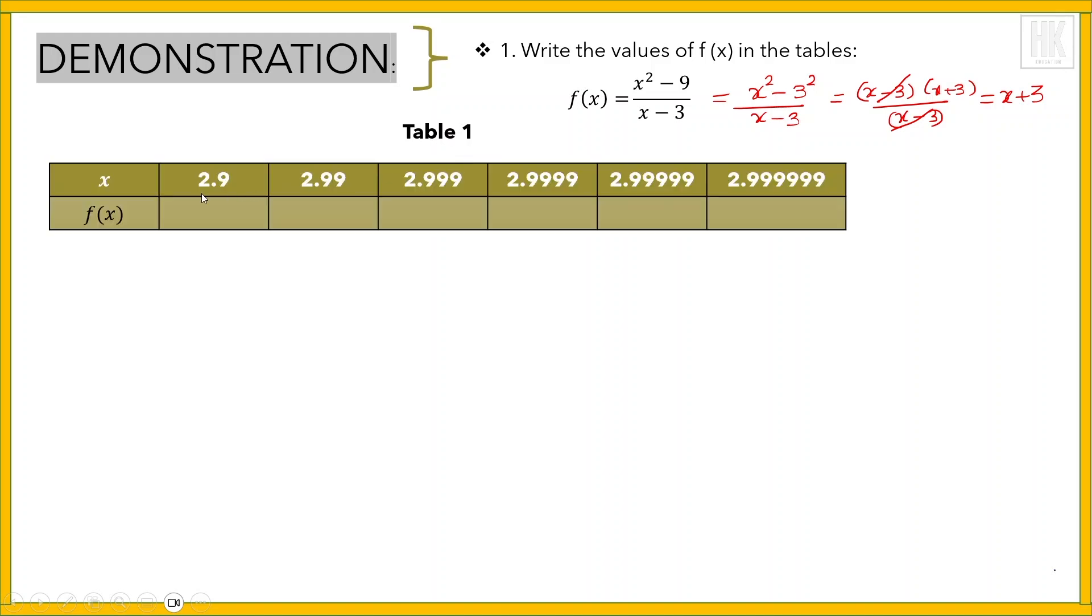values of x very close to 3: 2.9, 2.99, 2.999, and so on. If you put 2.9 here, the value will be 5.9. For 2.99, 3 + 2.99 equals 5.99. Similarly, 5.999, 5.9999, and so on. You will get the values of f(x) by substituting all the values less than 3.